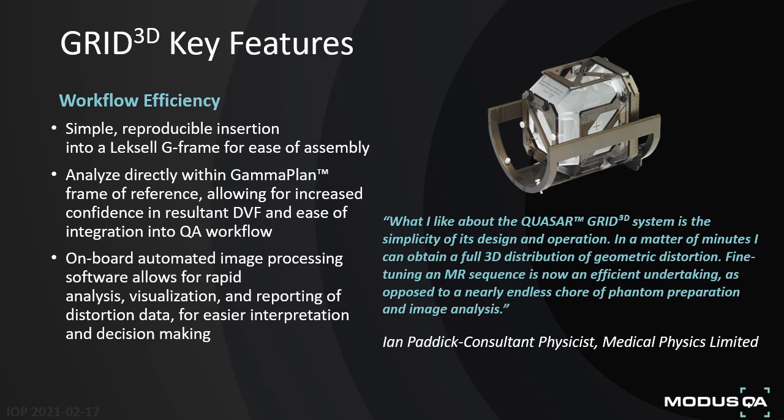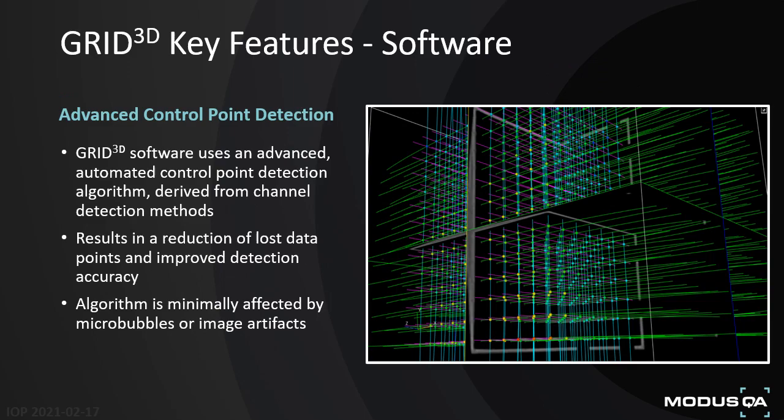It is for those reasons that Mr. Ian Paddock, a consulting physicist with many years of experience in Gamma Knife system commissioning, recommends the Quasar Grid 3D phantom for its geometric distortion assessments, because of its simplicity in design combined with fast and understandable operations that make it an easy and integratable addition to any QA protocol.